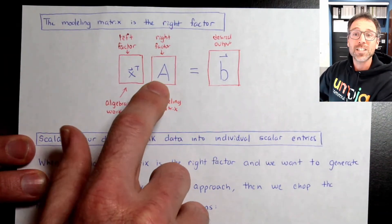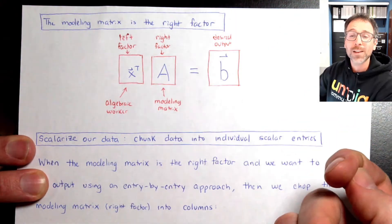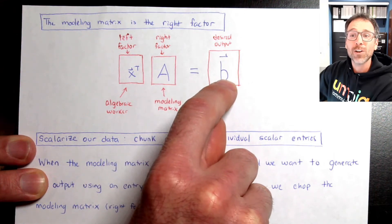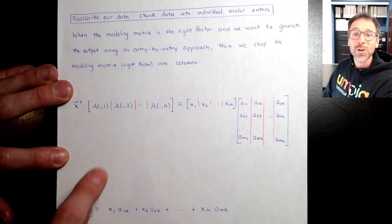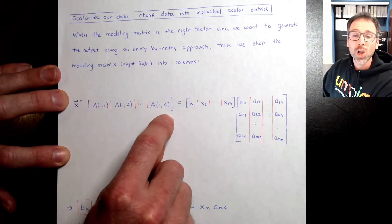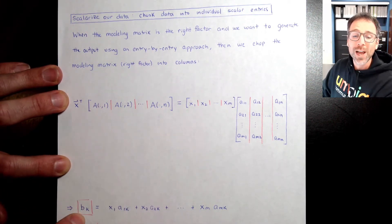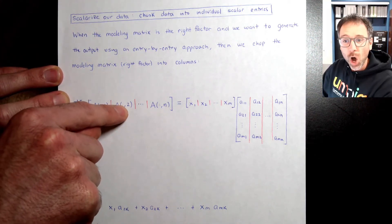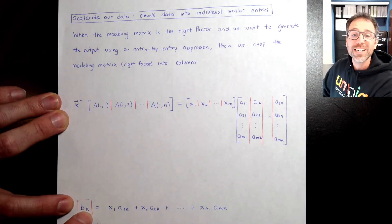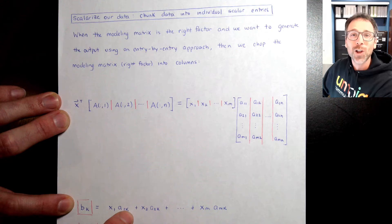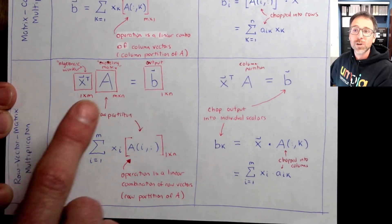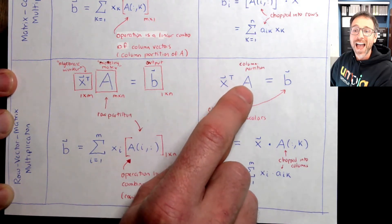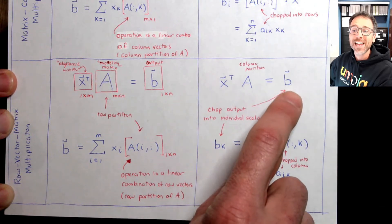Our final situation arises when we take row vector matrix multiplication with the modeling matrix on the right and we want to scalarize our data. We chop our modeling matrix into columns, and each individual entry of the output is a dot product between the vector x and the k-th column of A. That formula gives the scalar value of the k-th entry of our output. So for row vector matrix multiplication with scalarized output, we take the column partition of A and dot each column with x.